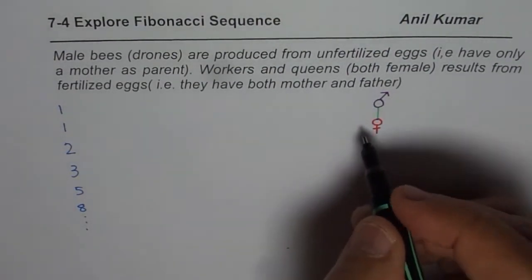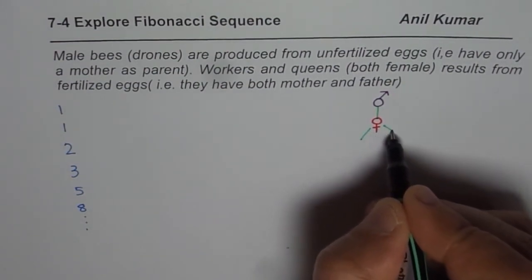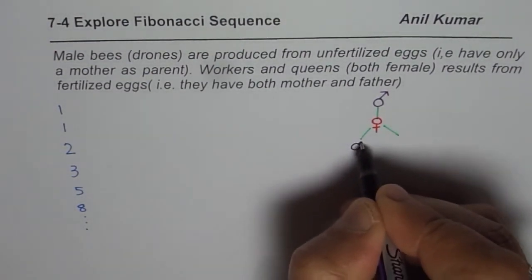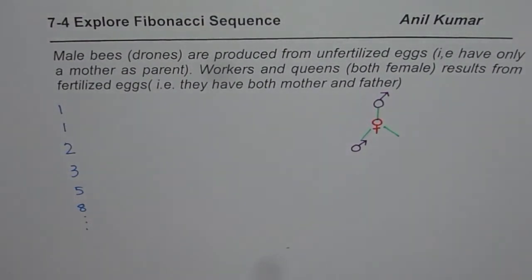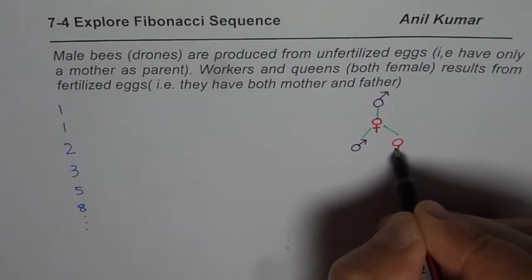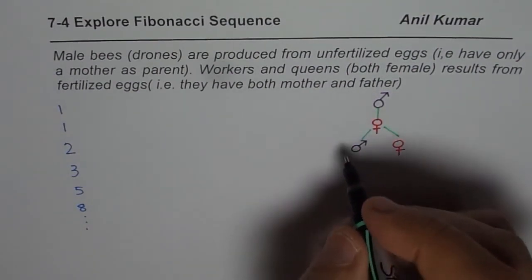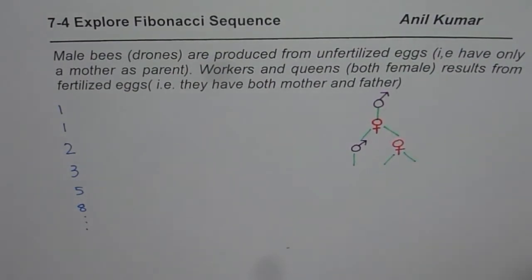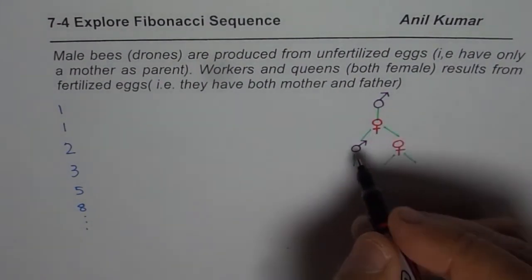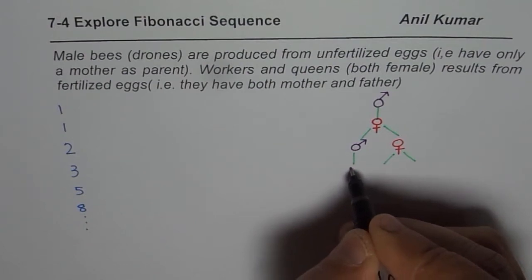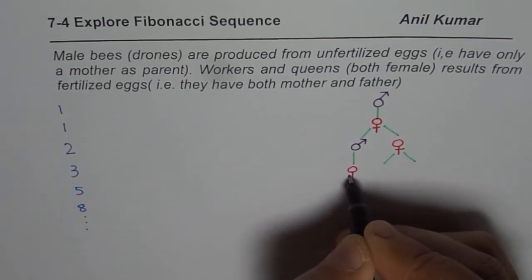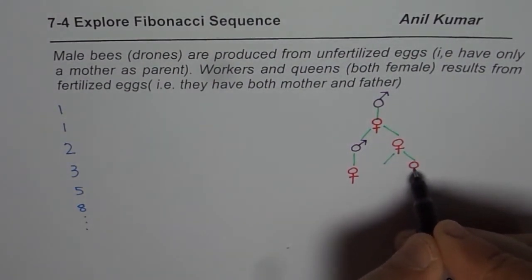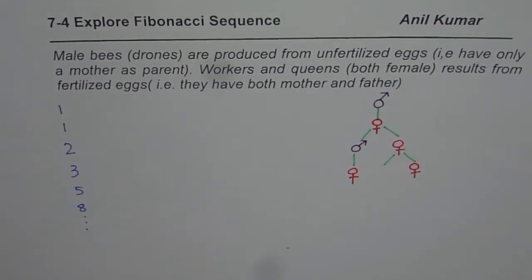The queen bee will have both parents, because these are fertilized eggs — so the queen bee will have a father and a mother. We will put these symbols right there carefully. Drones, the males, will have just one parent. However, the queen bee will have two. So the parent for the drone here will again be a queen bee. On the other hand, our queen bee will have both parents — so we have a queen and a drone.